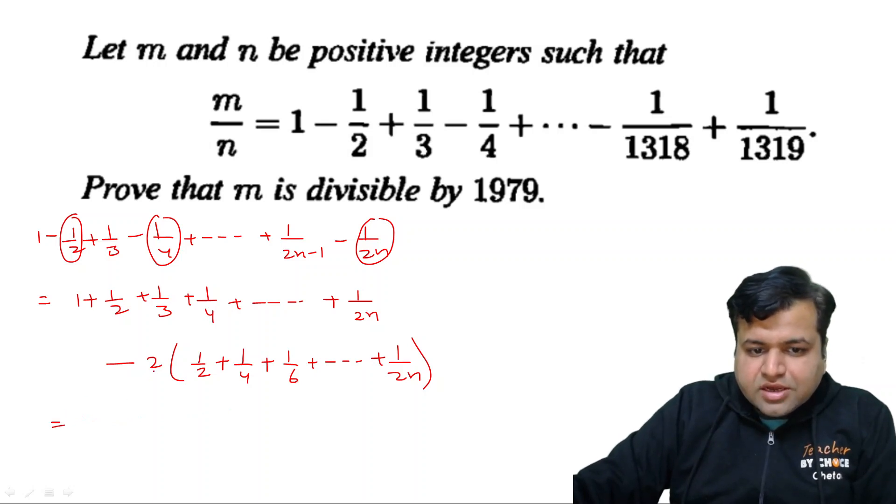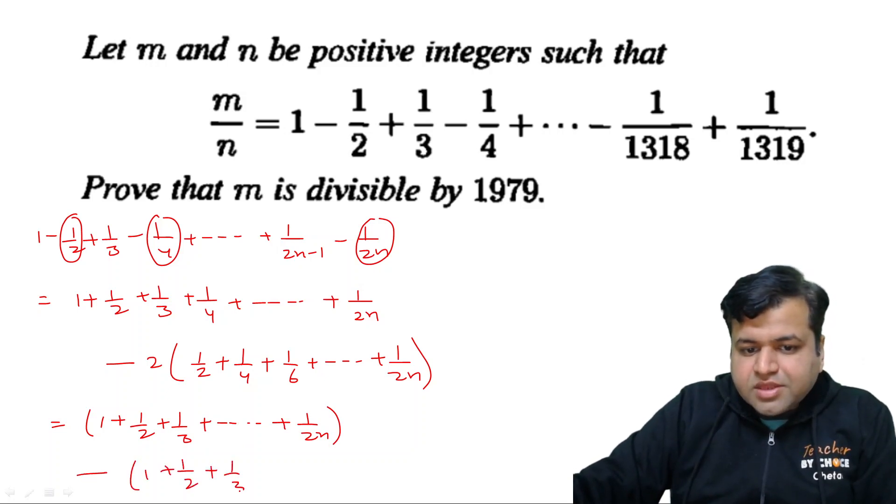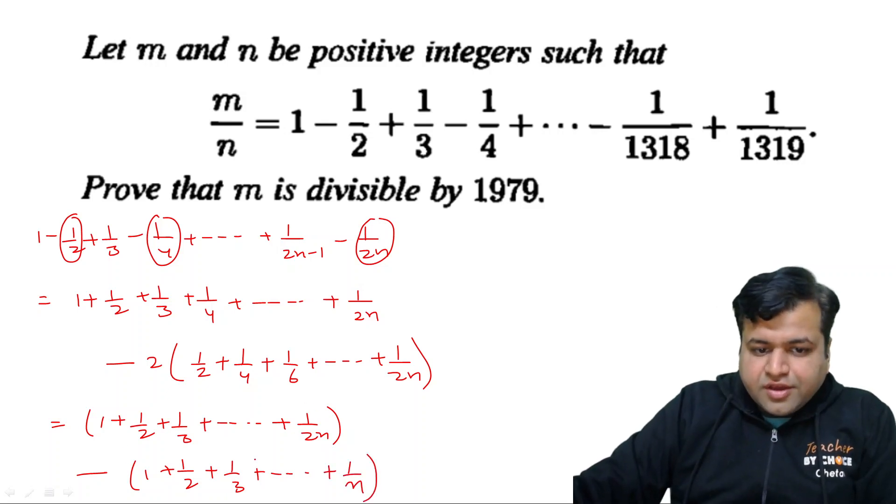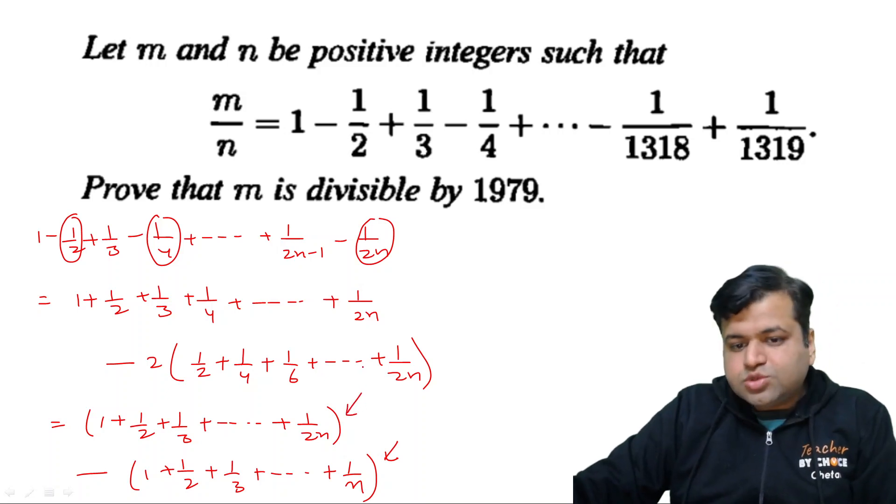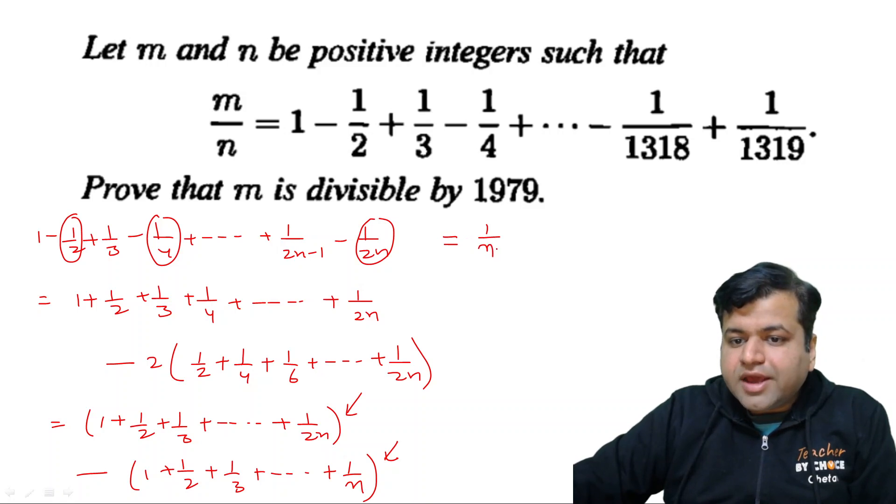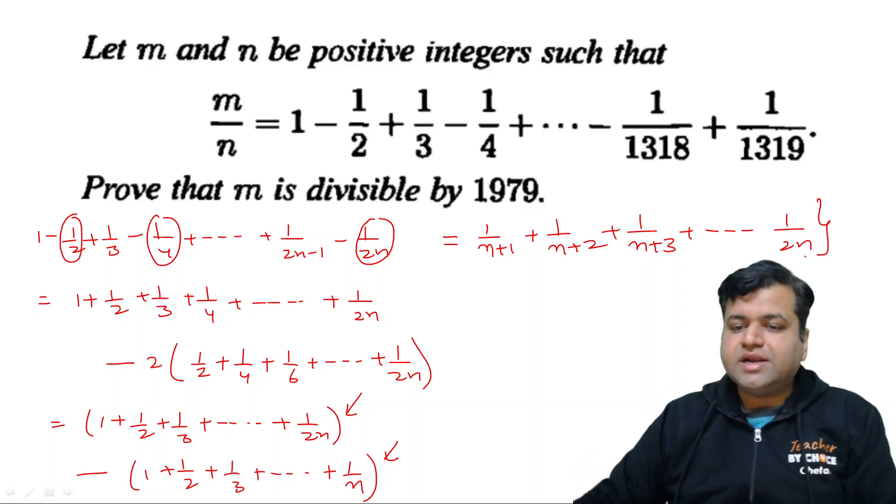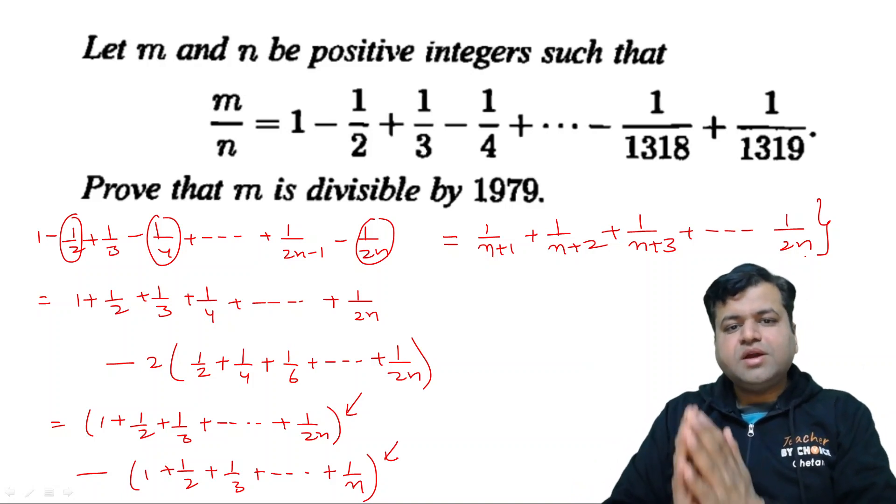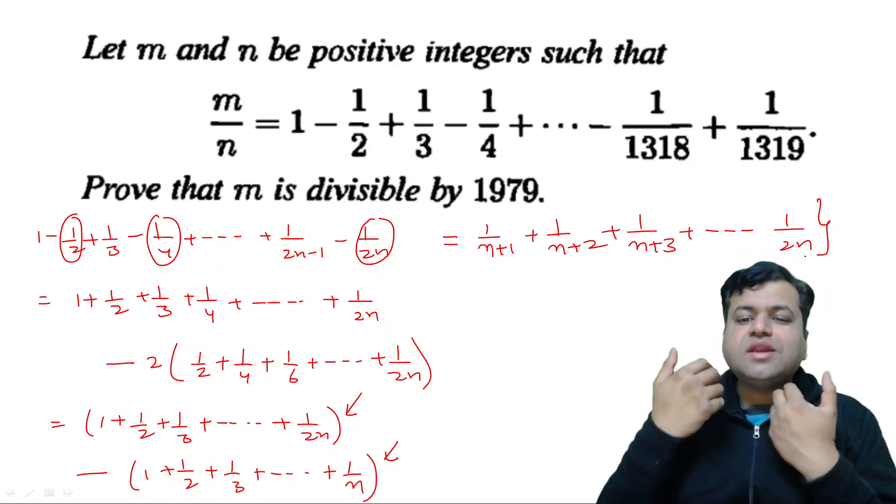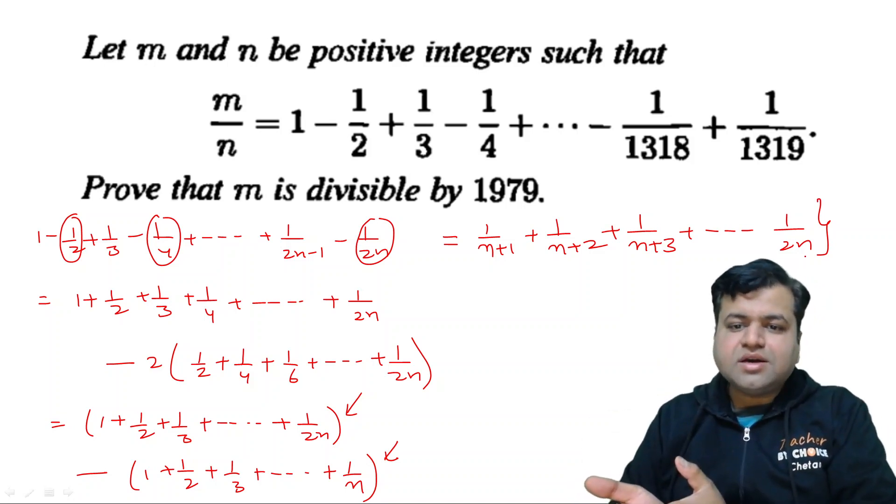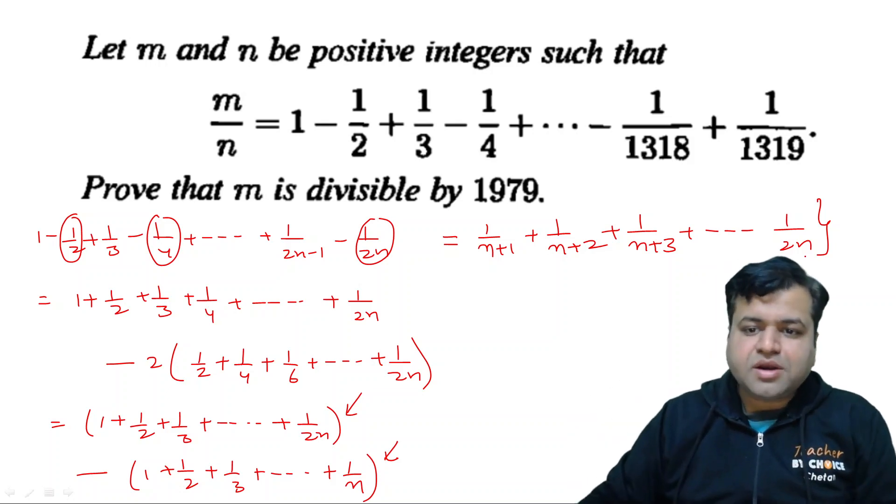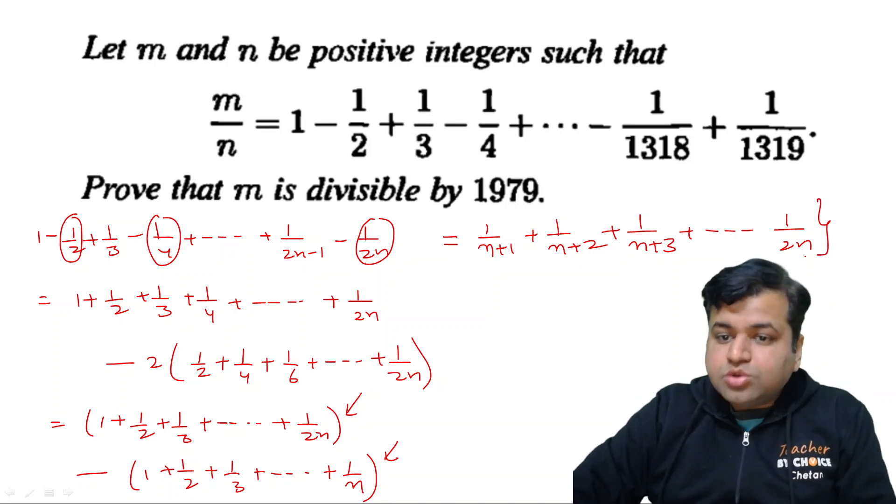Now if you see clearly, if we have 2, the first part was 1 plus half plus 1 by 3 plus and so on till 1 by 2n. Minus, now this part will become 1 plus half plus 1 by 3 plus and so on till 1 by n. Now if first n terms are subtracted from these first 2n terms, then what we are left with? We will be left with 1 upon n plus 1, n plus 1 says start off, obviously 1 by n to cancel out. Plus 1 by n plus 2 plus 1 upon n plus 3 plus and so on till 1 upon 2n. So this is Catalan's identity.